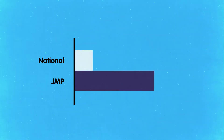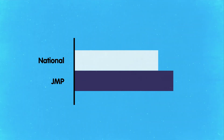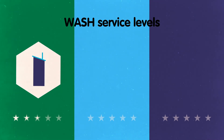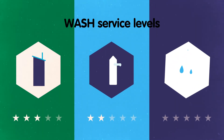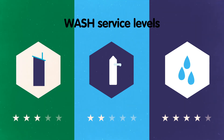Ideally, national monitoring standards and those of the JMP align. Together, the service ladders measure WASH service levels, providing important insights on the strength of the WASH system.